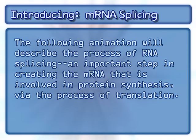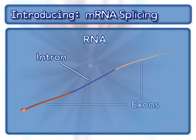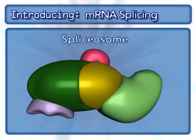Key factors in this process include RNA possessing introns and exons, and the spliceosome.